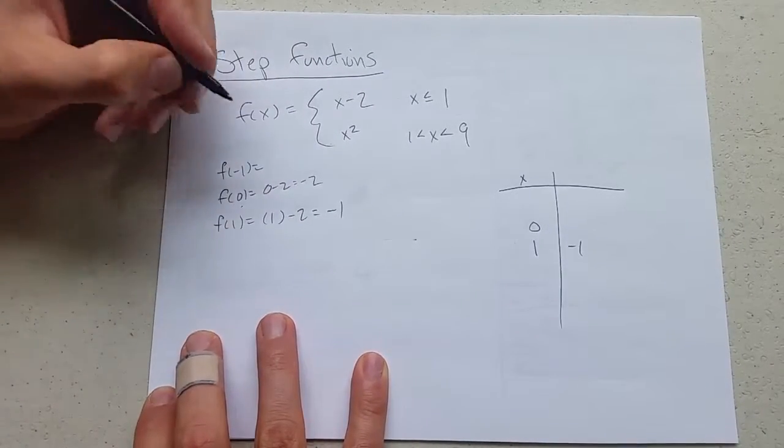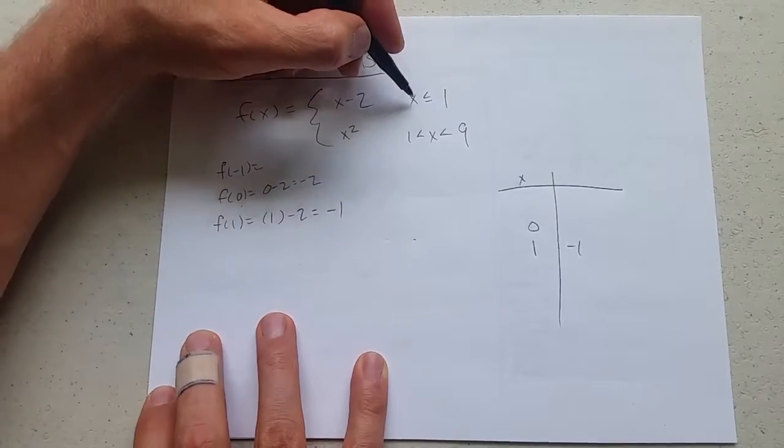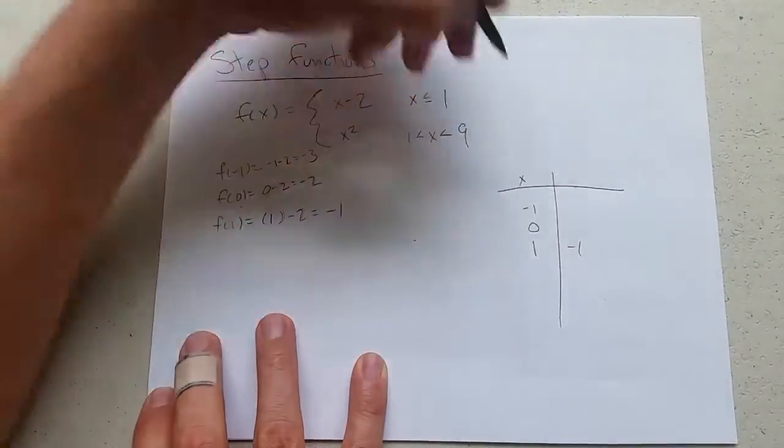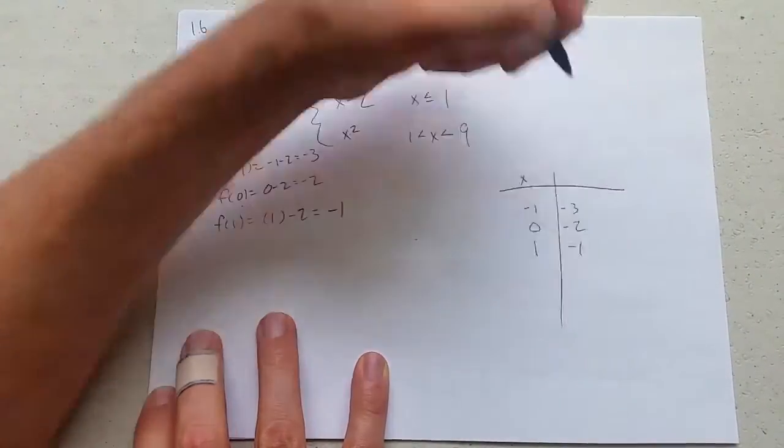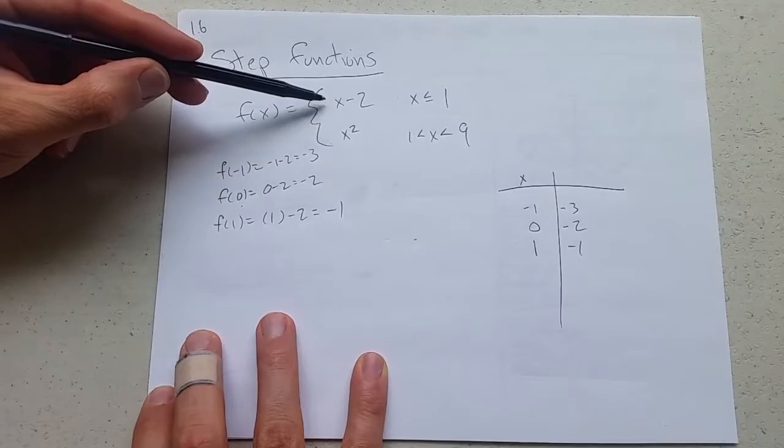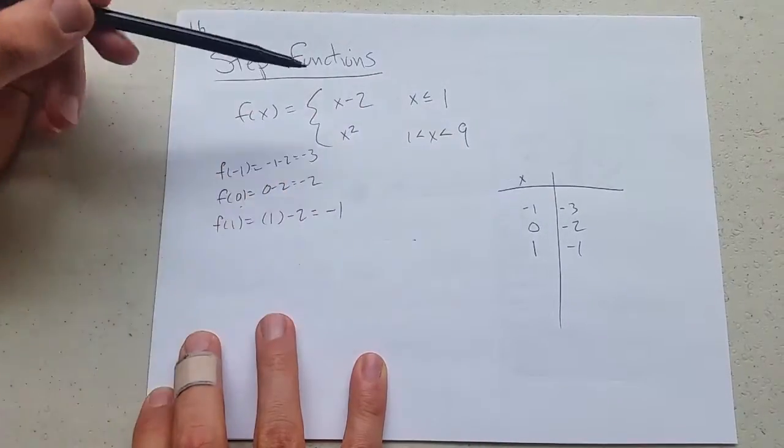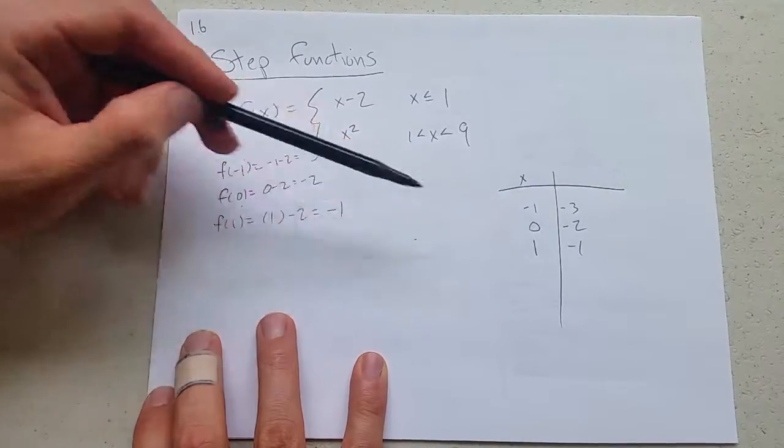We'll go ahead and do f of negative 1. Negative 1 is less than 1. So it's negative 1 minus 2 equals negative 3. We could keep going and plug in negative 2, negative 3, negative 4. But this will be enough for the pattern here.